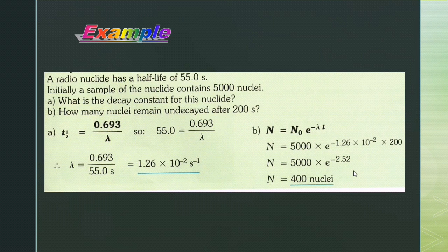Example: A radionuclide has a half-life of 55.0 seconds. Initially, a sample of the nuclide contains 5000 nuclei. (a) What is the decay constant for this nuclide? (b) How many nuclei remain undecayed after 200 seconds?